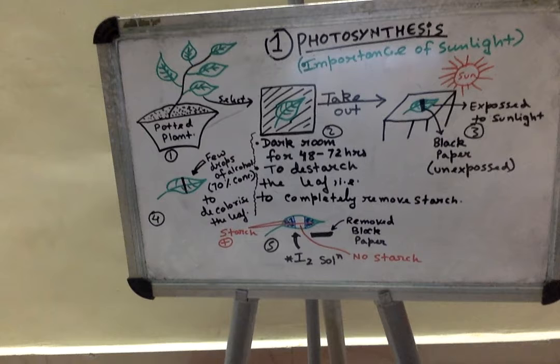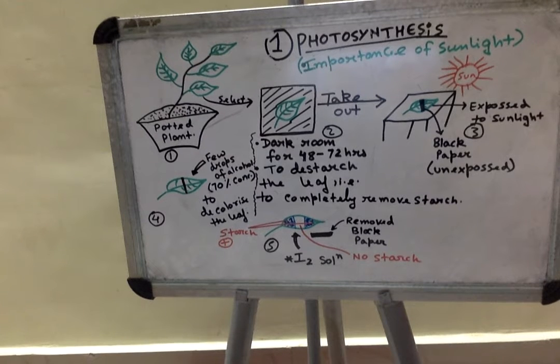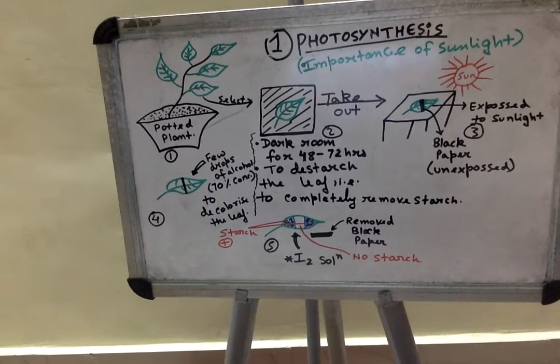But before that, put a black paper strip to one part of the leaf to make that particular region covered or unexposed to the sunlight.